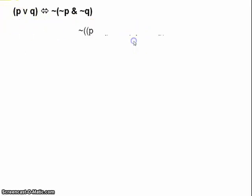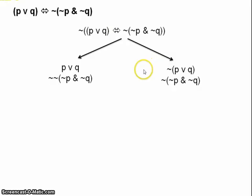So, we start by assuming its negation. The main operator here is the biconditional. Recall the rules for the negated biconditional. We need two branches, one with A and not B, the other with not A and B, which corresponds to P or Q and not P and not Q on one side. And, well, you can see the other.